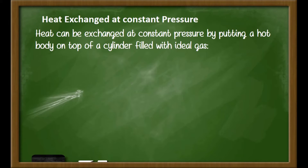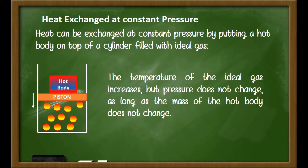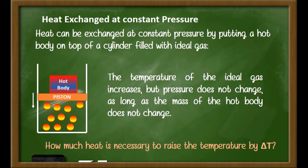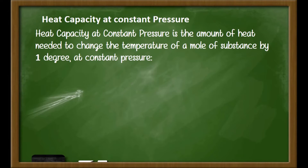The first case we are going to study is how heat is exchanged at constant pressure. Heat can be exchanged at constant pressure by putting a hot body on top of a cylinder filled with ideal gas, as shown in the picture. The mass of the hot body is constant and heat can be exchanged to the ideal gas system enclosed inside. The temperature of the ideal gas increases, but pressure does not change as long as the mass of the hot body does not change. We will now define heat capacity for the first time.